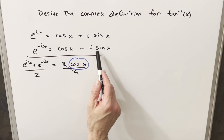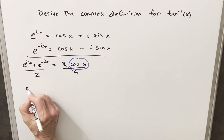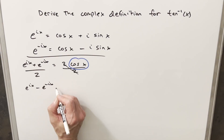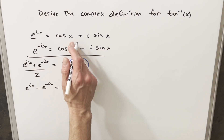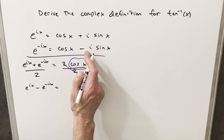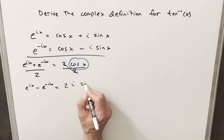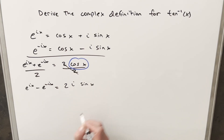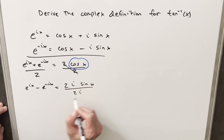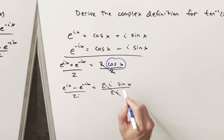Doing something really similar, what I could do is subtract these equations. So if I subtract e^(-ix) from e^(ix), the cosines are going to cancel, and because we're subtracting the second one, this is going to turn into a plus and we end up with 2i sine x. Then all I need to do is divide by 2i on both sides, and this gives us our complex definition for sine.